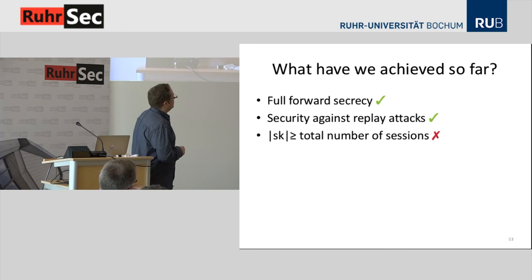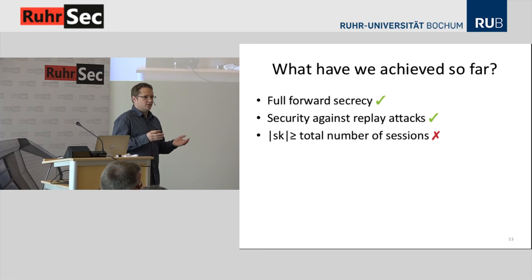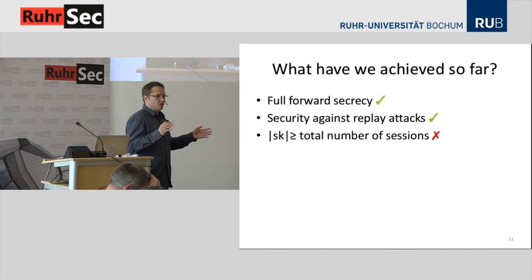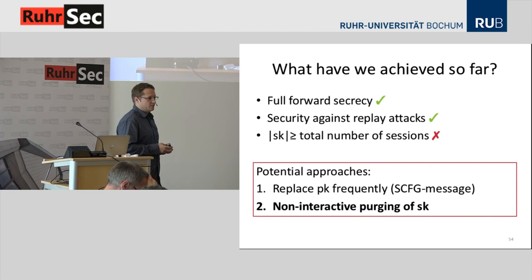So what have we achieved so far? At least we have a protocol which achieves full forward secrecy even for the very first message. It's secure against replay attacks because the server is not even able to decrypt the ciphertext anymore, so it will reject any replayed ciphertext. But unfortunately, the secret key is larger than the total number of sessions — it grows — and this is still bad. What can we do about this?